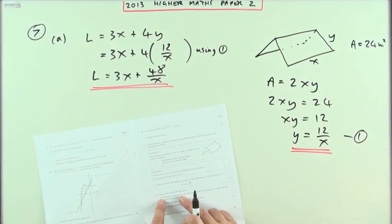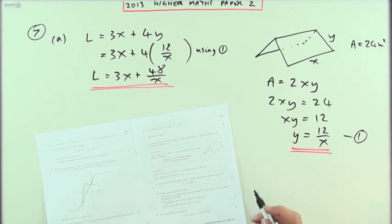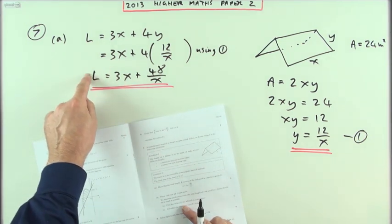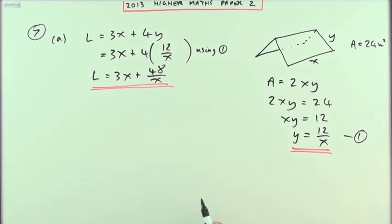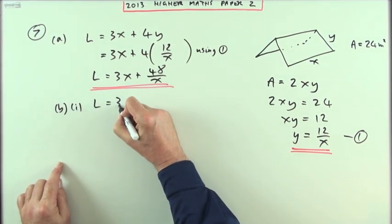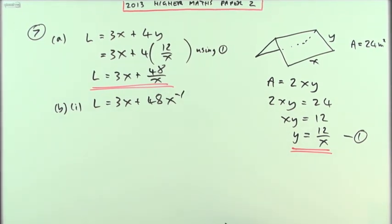Now for part b it says these rods cost £8.25 a metre. I don't know what length I've got so far but you want to minimize the costs so you want the rods to be as small as possible. That's where there's an optimization question then. So first of all find x to get the smallest length. Well for part b then, part 1. Well if L is equal to that I'll just rewrite it as 3x plus 48x to negative 1 because I'm going to be differentiating.